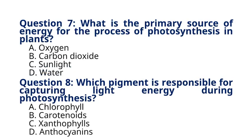Question 7. What is the primary source of energy for the process of photosynthesis in plants? A. Oxygen. B. Carbon dioxide. C. Sunlight. D. Water. The correct answer to question 7 is option C. Sunlight.